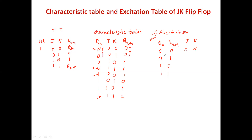For Q(n)=0 and Q(n+1)=1: Q(n) is 0 in these two cases and Q(n+1) is 1. J is fixed as 1, K may be 0 or 1 — so J=1, K=don't care. For Q(n)=1 and Q(n+1)=0: checking the characteristic table, K is fixed at 1 and J may be either 0 or 1 — so J=don't care, K=1.